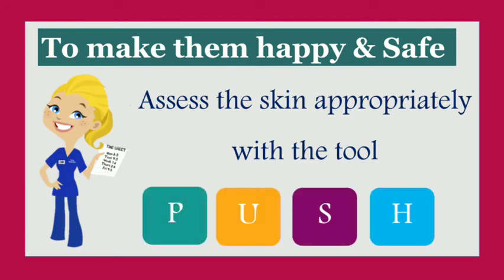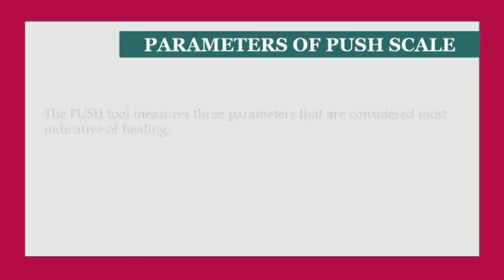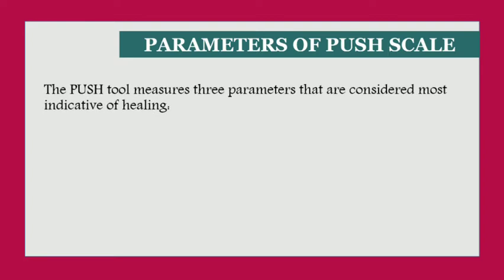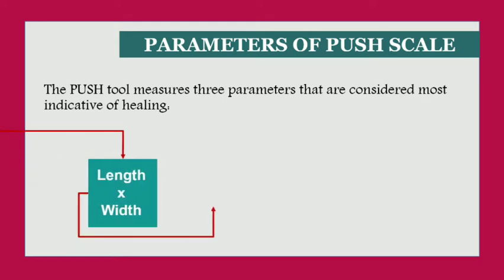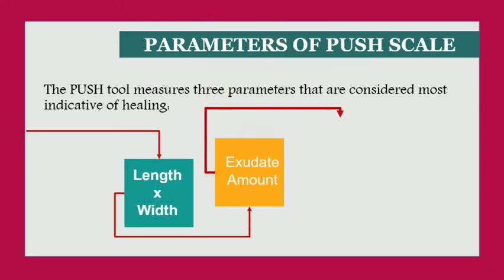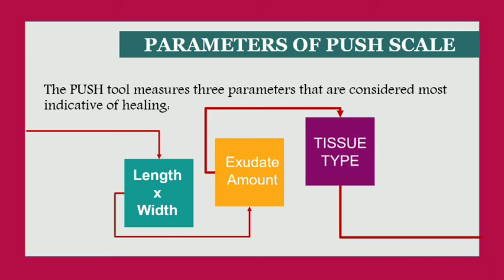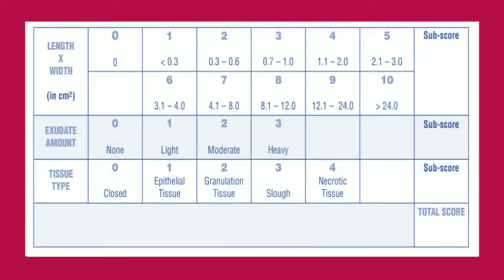PUSH stands for Pressure Ulcer Scale for Healing. There are three parameters considered most indicative of healing: the first is length × width, the second is exudate amount, and the third is tissue type. For length × width you can give a score up to 10, for exudate amount up to 3, and for tissue type up to 4.